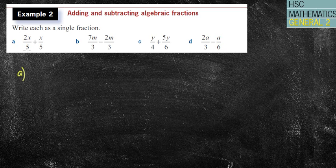So, I'll recognize for A, the denominators are already the same, so I'm simply going to add the top. So, 2x plus x is 3x all over 5. That's it. One nice, quick way.